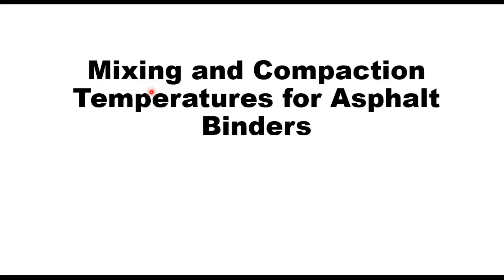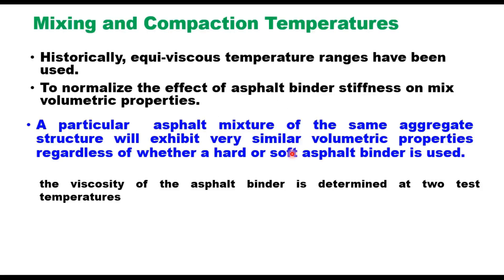Today we shall discuss mixing and compaction temperatures for asphalt binders and how to determine these temperatures for a mix. These are important because volumetric properties of a mix may change with mixing and compaction temperature. Historically, asphalt lab procedures have used equiviscous temperature ranges for design, for selecting laboratory mixing and compaction temperatures. The purpose of using this equiviscous temperature in laboratory mix design procedure is to normalize the effect of asphalt binder stiffness on mix volumetric properties.